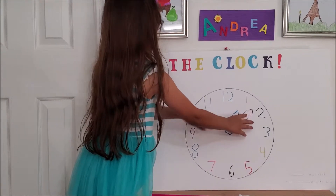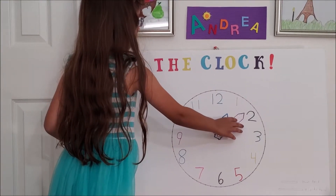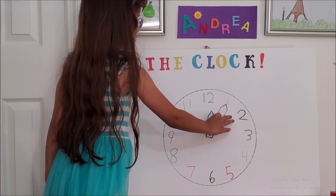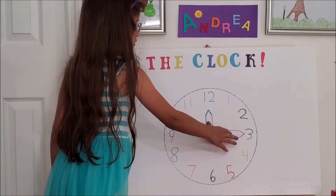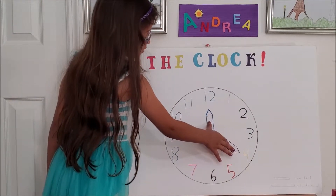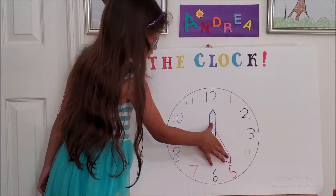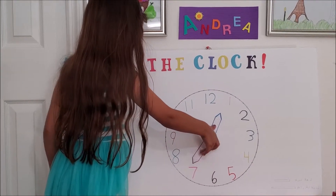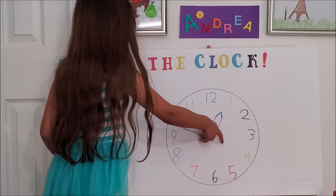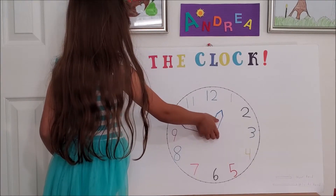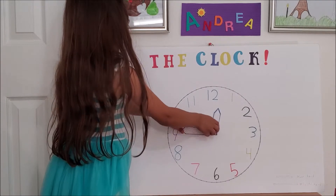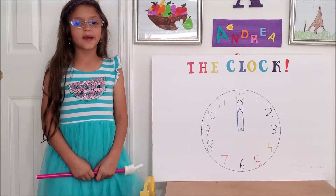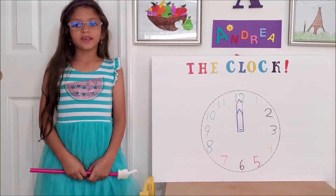Even if the hour hand is not on the 12, it doesn't mean that it's on the 1 yet. For example: 12:05, 12:10, 12:15, 12:20, 12:25, 12:30, 12:35, 12:40, 12:45, 12:50, 12:55 — until 1 o'clock. I'll give you three examples of how to read an analog clock.